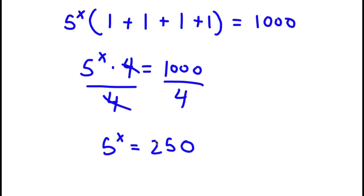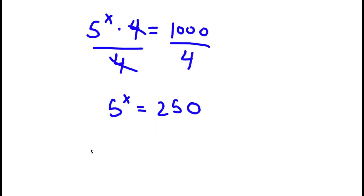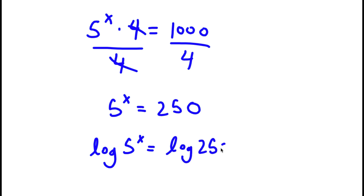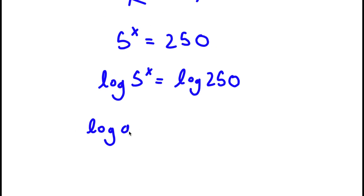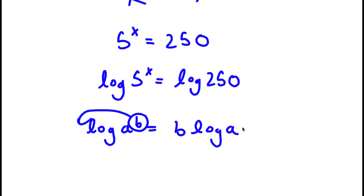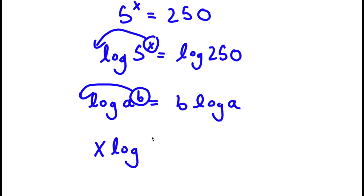So I have 5 to the power of x is equal to 250. Now I'm going to take the log on both sides. So I have log 5 to the power of x is equal to log 250. If I have something in the form log a to the power of b, I can simply move this exponent of b to the front — so this equals b times log a. In this case, I move x to the front, so that's x times log 5, which is equal to log 250.